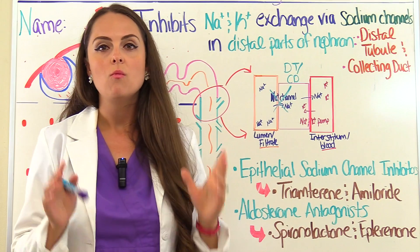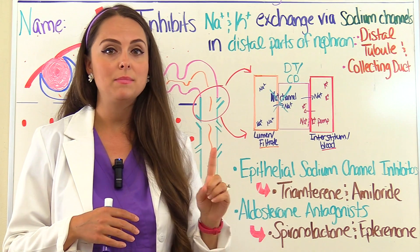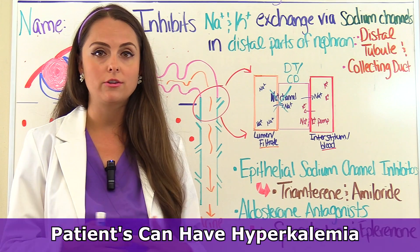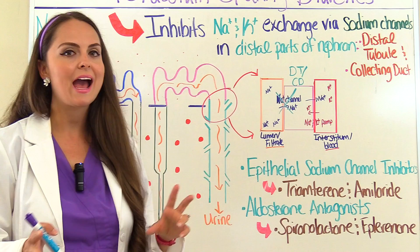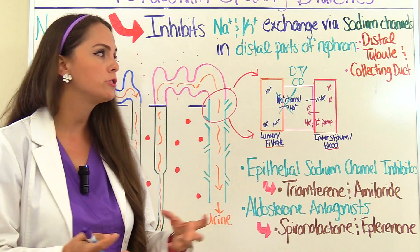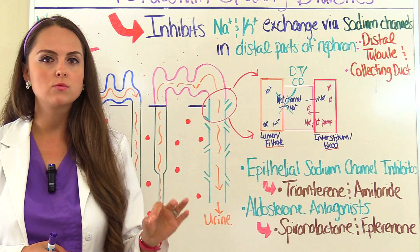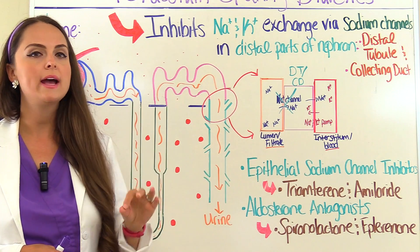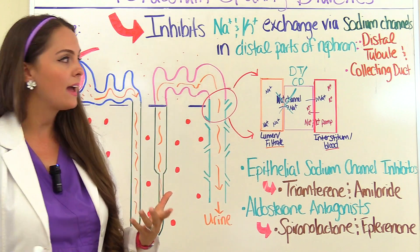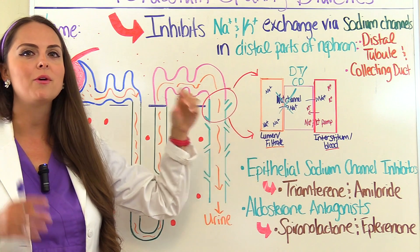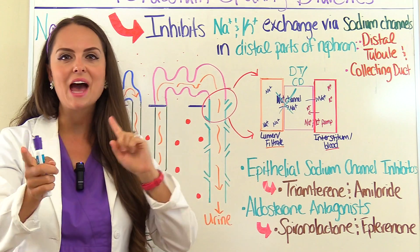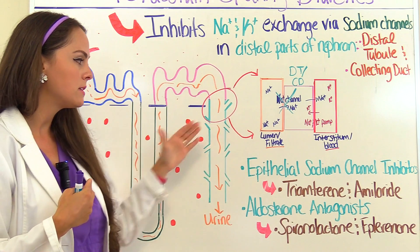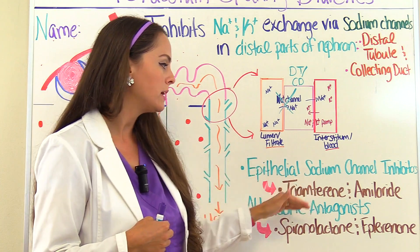One thing to remember with potassium sparing diuretics is that they keep potassium through that process, but patients can develop hyperkalemia where their blood level of potassium is increased. Now there are two different types of potassium sparing diuretics. The first type are called epithelial sodium channel inhibitors. These drugs directly inhibit the sodium channel, causing more sodium to stay in the filtrate, drawing more water for a diuretic effect, while sparing potassium — creating that risk of hyperkalemia. Drugs in this category include triamterene and amiloride.